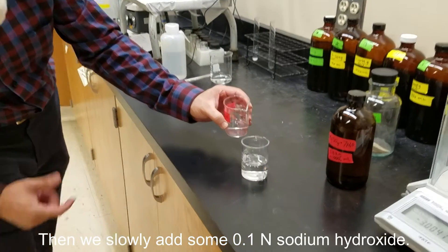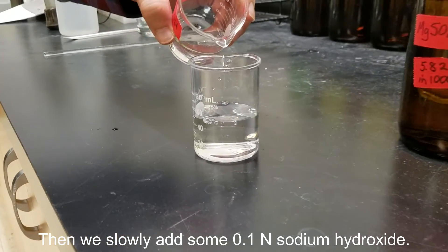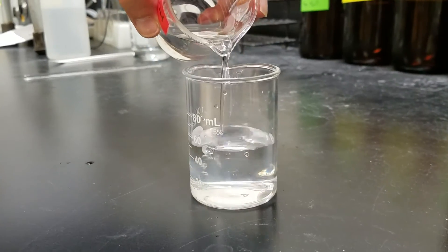Then we start adding sodium hydroxide. The chemical reaction will form magnesium hydroxide.